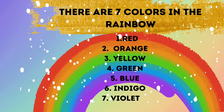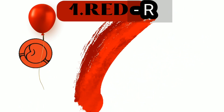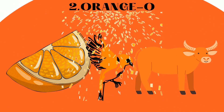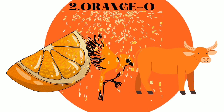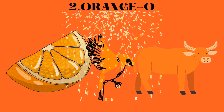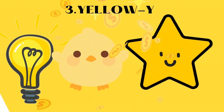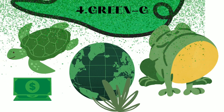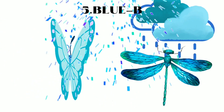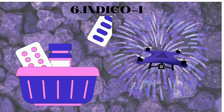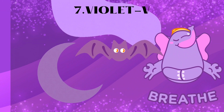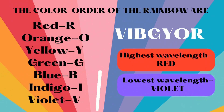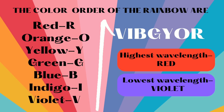Do you know how the word VIBGYOR forms? The first letter of red is R, and the first letter of orange is O, and the first letter of yellow is Y, and the first letter of green is G, the first letter of blue is B, and the first letter of indigo is I, and finally the first letter of violet is V. These are the color order of the rainbow, and the first letters of these colors are combined together to form the word VIBGYOR.